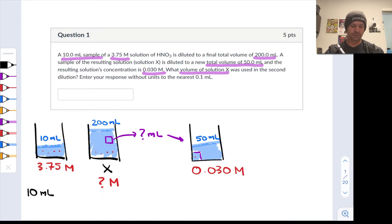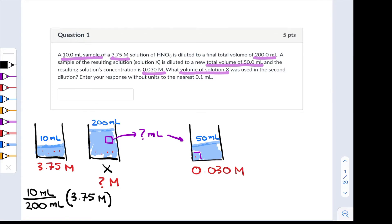The initial concentration was 3.75 molar so the molarity of solution X here is 1/20th of 3.75 and so now we know the molarity of solution X: 0.1875 moles per liter.